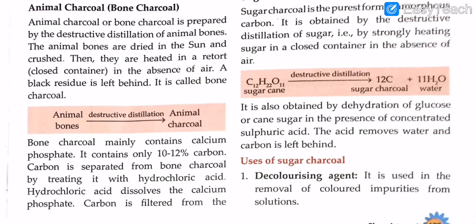Bone charcoal mainly contains calcium phosphate and only 10 to 12 percent carbon. Carbon is separated from bone charcoal by treating it with hydrochloric acid, which dissolves the calcium phosphate. The carbon filtered from the solution is called ivory black or bone black. Animal charcoal is highly porous and a good absorbent of gases and liquids.